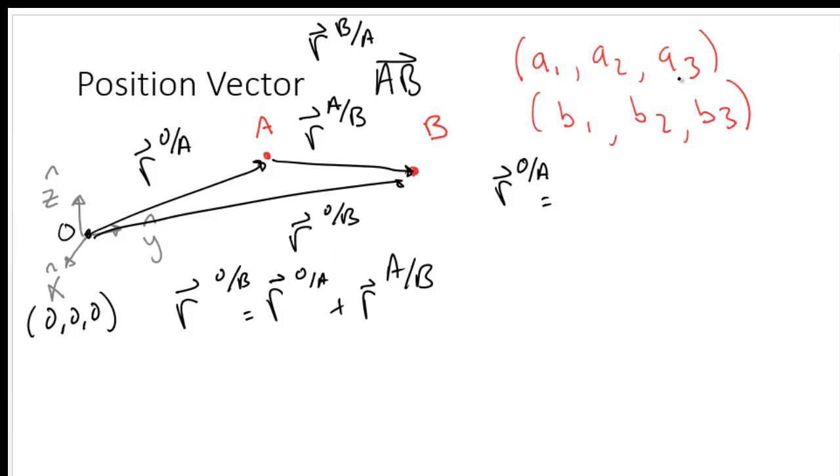Given these coordinates, we can say R O A is A1 X hat plus A2 Y hat plus A3 Z hat. Similarly, R O to B equals B1 X hat plus B2 Y hat plus B3 Z hat.